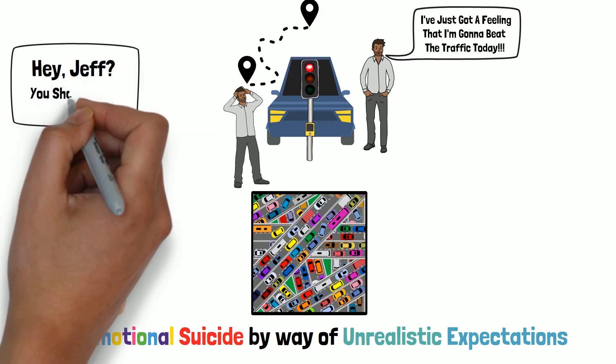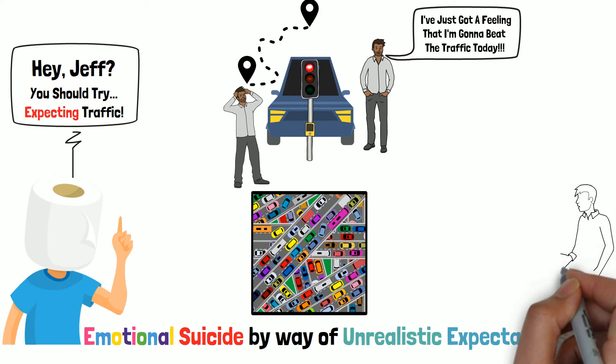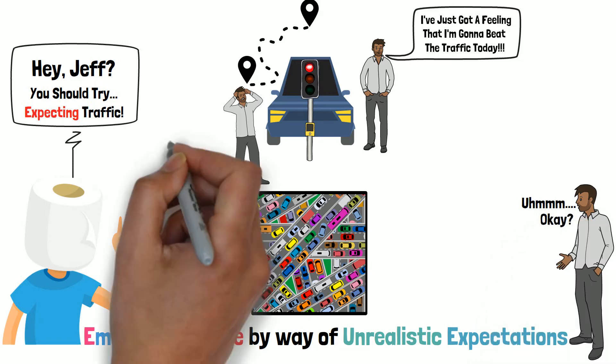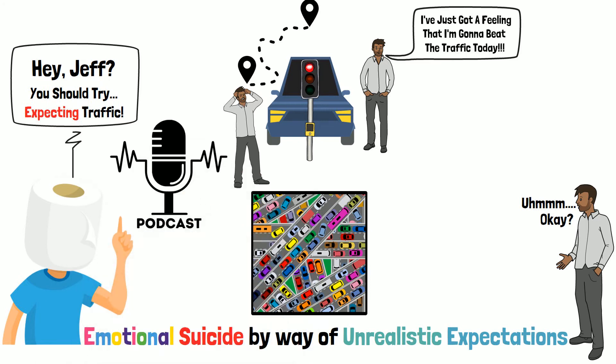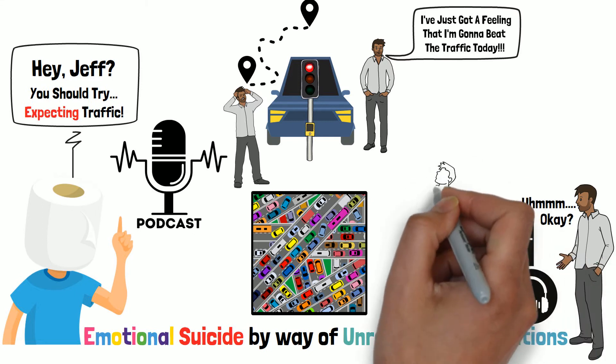By simply modifying his expectations so that he expects traffic, Jeff can change his experience of it. If he would expect the traffic, running into it wouldn't be perceived negatively. Let's say he accepts it as a part of his day and it quickly meshes into his morning routine. He's now got hundreds of hours of podcasts lined up on a playlist, and he's even started a few audiobooks on how to control his anger.